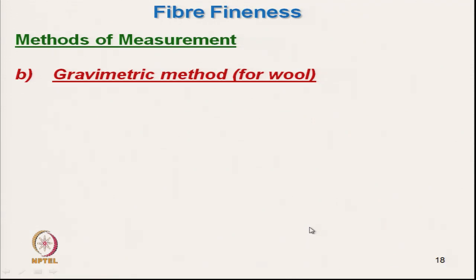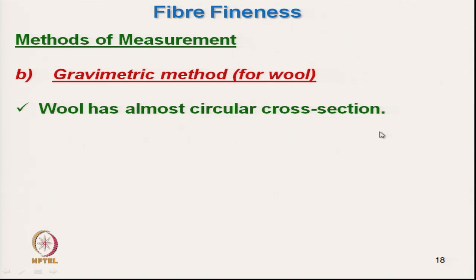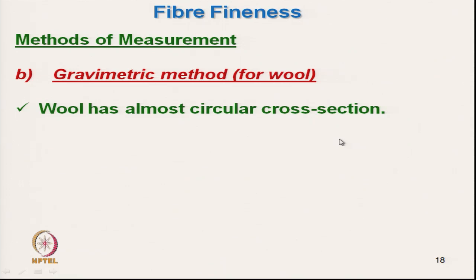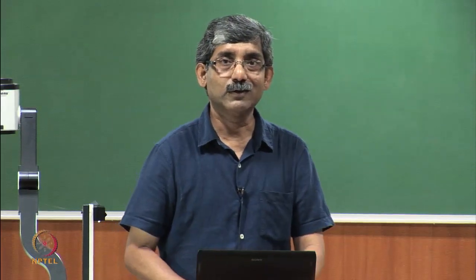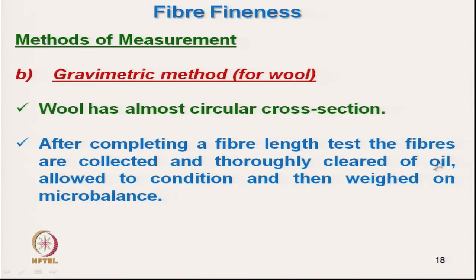The gravimetric method for wool is slightly different. Since wool has an almost circular cross-section, we can measure either mass per unit length or derive diameter. After completing the fibre length test, the fibres are collected, thoroughly cleaned of oil (oil from the comber affects diameter measurement), dried, and conditioned in standard atmosphere before weighing on a micro-balance.